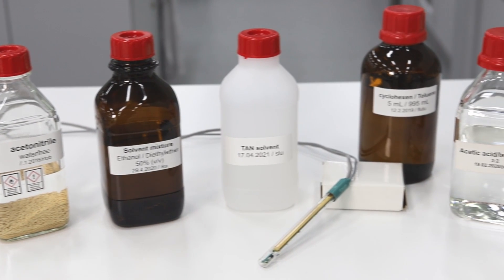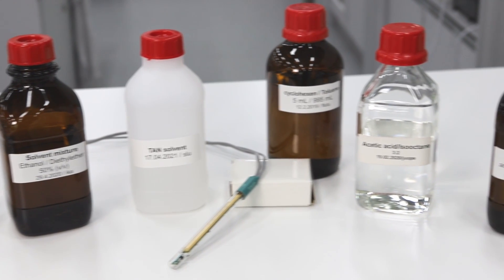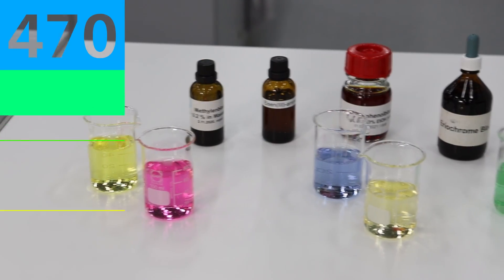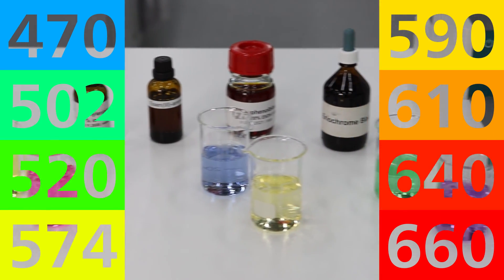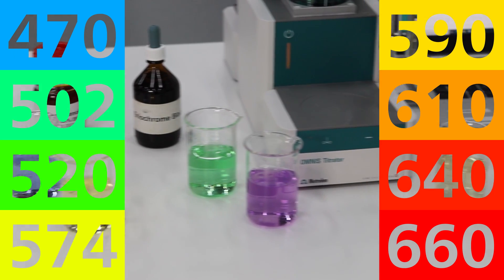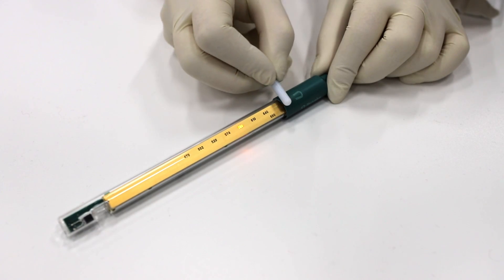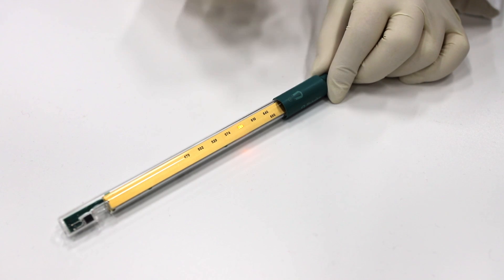You can even use solvents as the Optrode is made of glass and thus resistant to most kinds of chemicals. Different applications with different color changes are not a problem. You can choose from eight wavelengths over the whole visible light range. Simply change the wavelength using a magnetic steering bar.